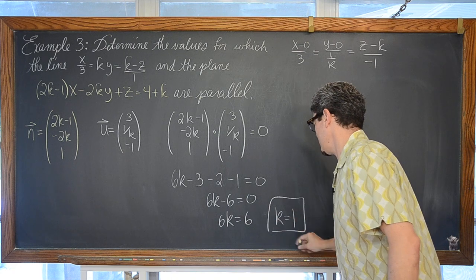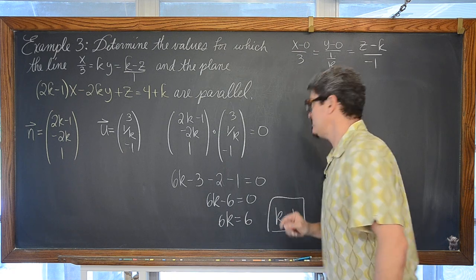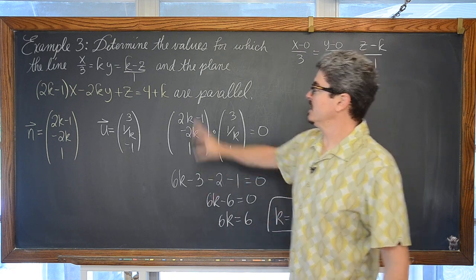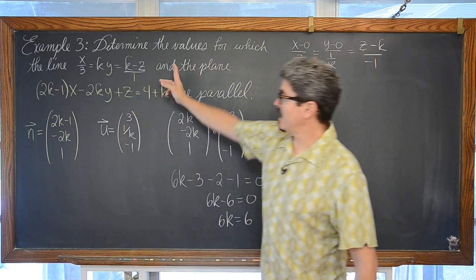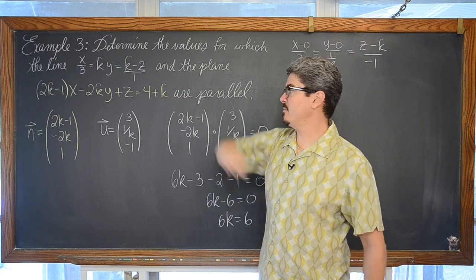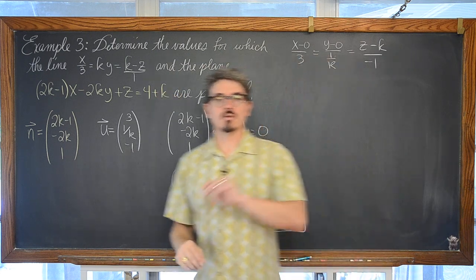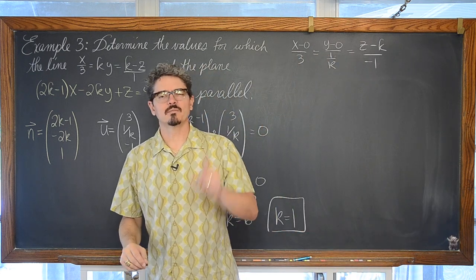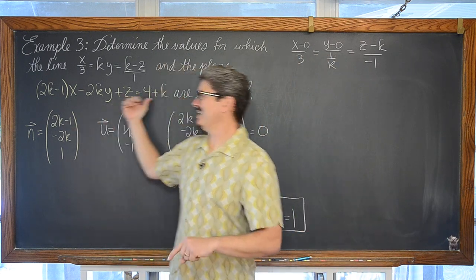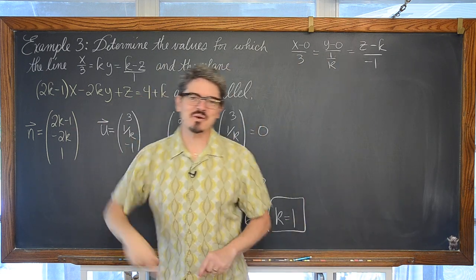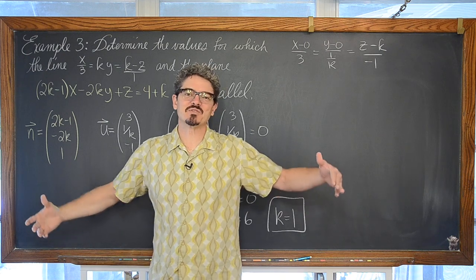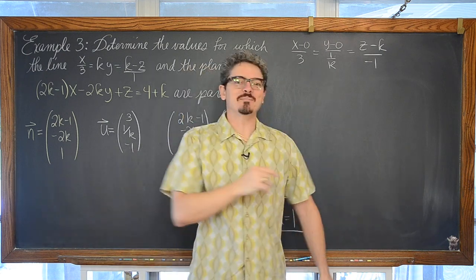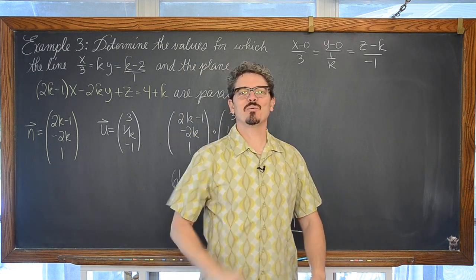So when K = 1, the line and the plane are parallel. That's our last example. I'm Mr. Tarrou — BAM! Go do your homework.